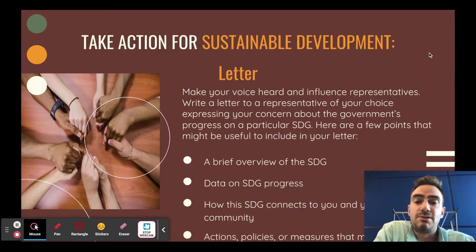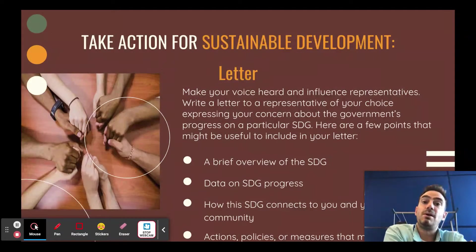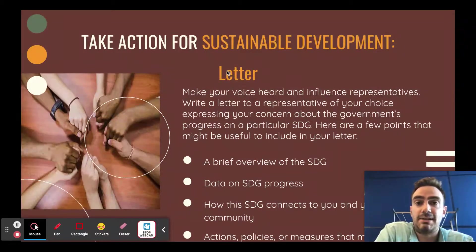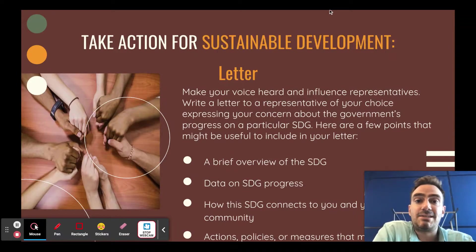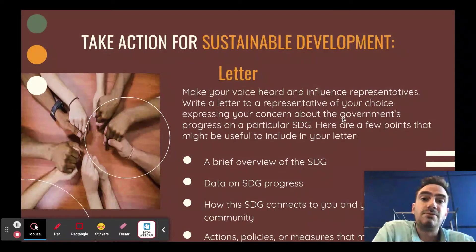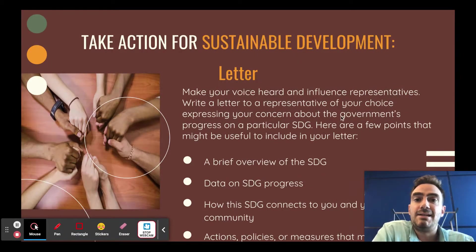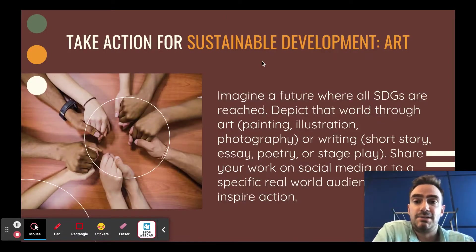The second component is that you're going to take action to help make this sustainable development goal better and create some change in the world. You have two options for taking action. The first option is to write a letter in which you'll overview the sustainable development goal and any progress that's been made. You'll talk about how this connects to an important community, and then discuss different actions, policies, or measures that you'd like to see enacted to help with this sustainable development goal.